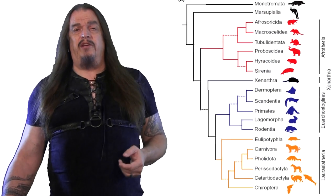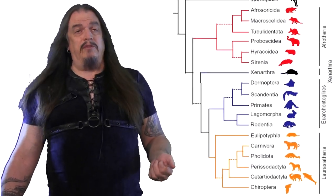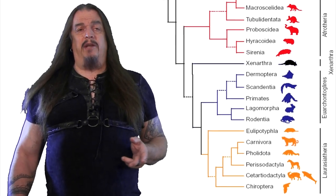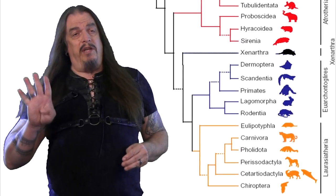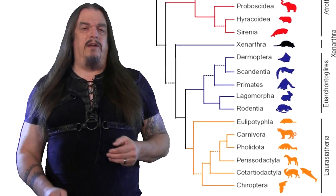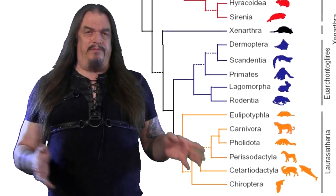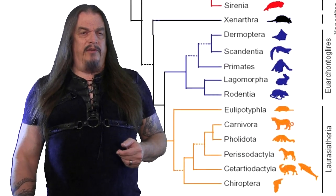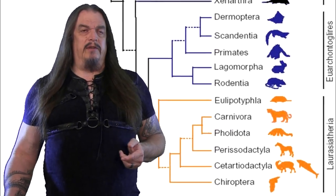The Laurasatherians — meaning mammals of Laurasia — include shrews, pangolins, carnivorans, bats, and two categories of hooved mammals depending on whether they're odd-toed, like horses and rhinos, or even-toed, like pigs, cattle, and deer. And this group also includes whales, even though they're not odd-toed and don't have hooves at all anymore — we'll explain more about that later in the series.